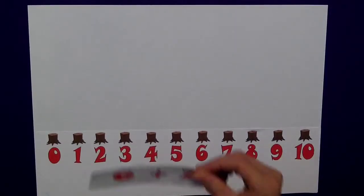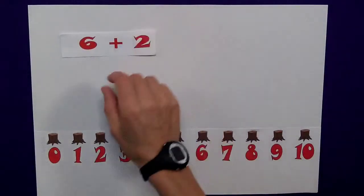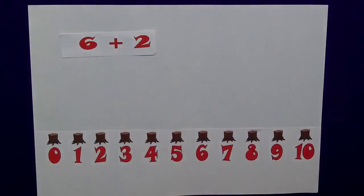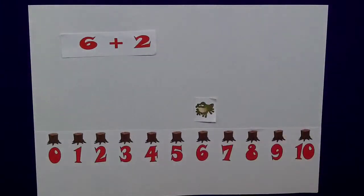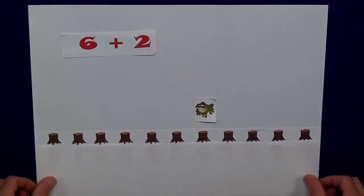So, the method that I use, I give my daughter the question, we determine the starting point, or Freddie here, on number 6, I then cover up the numbers, and then we determine the jumps.